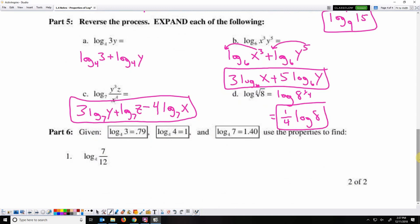And last, evaluate log base 4 of 7 over 12 using this information. I have a value for log base 4 of 7. I don't have a value for 12, but I have a value for 3 and 4, so I can rewrite this as log base 4 of 7 over 3 times 4. Then I can expand that to log base 4 of 7. Since it's divided, that will be minus, and I've got two logs to add here. So in parentheses, log base 4 of 3 plus log base 4 of 4.